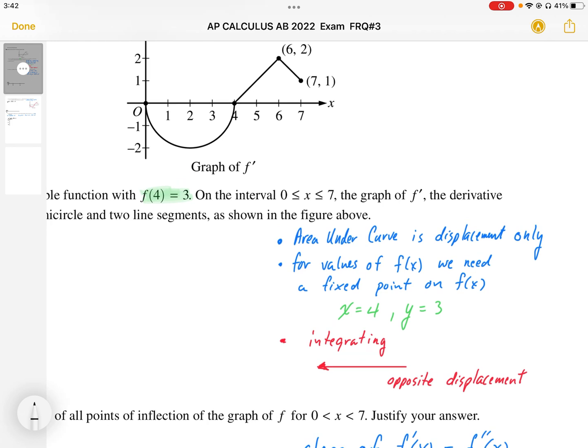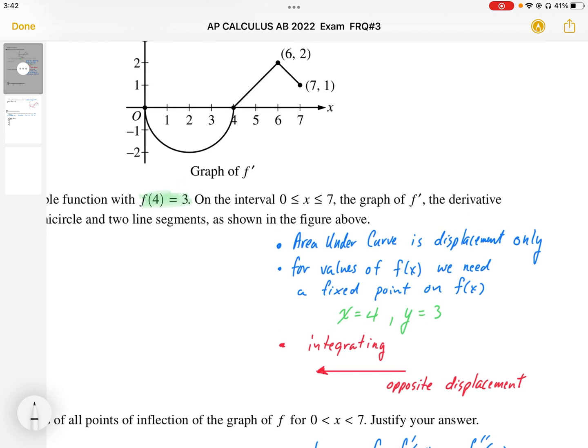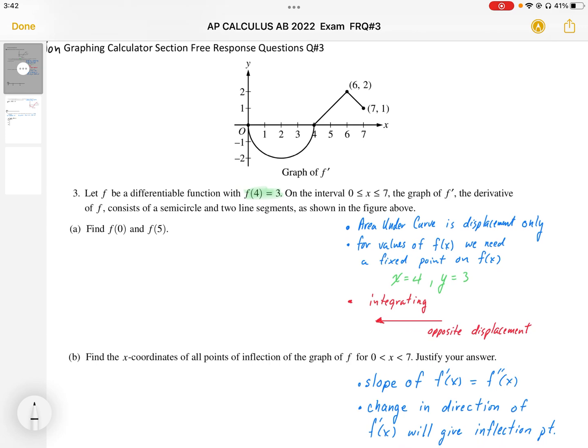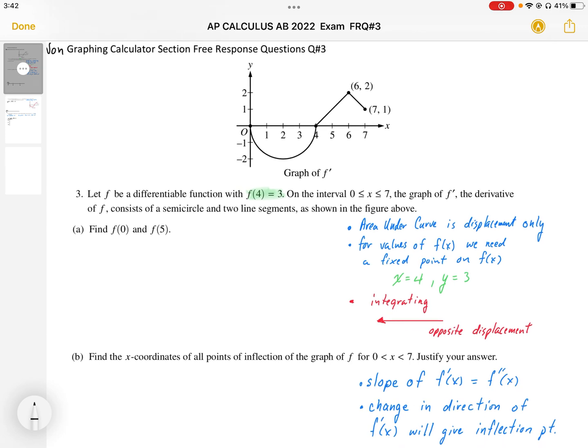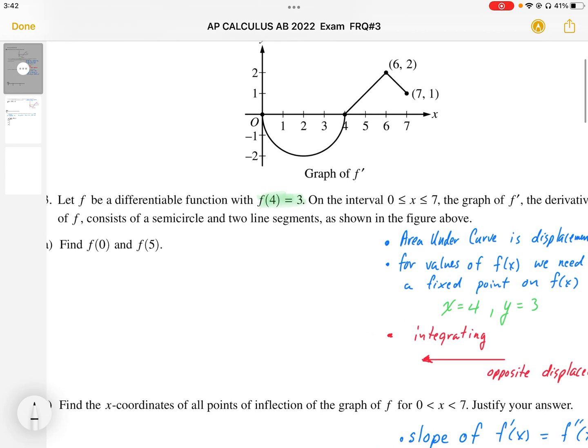Some key points are that the area under the curve is only the displacement. So if we want to find values of f of x, we need to start at a fixed point. In that case, our fixed point is going to be x equals 4, y equals 3. The other thing is, as we integrate from right to left, we're going to get the opposite displacement. So our starting point, I'm just going to clearly mark out here, we're going to start at 4, x equals 4.